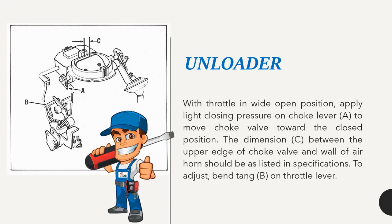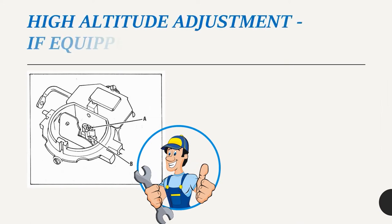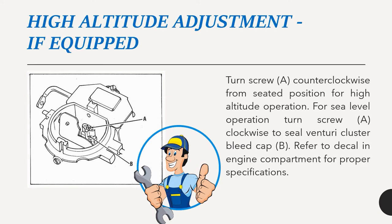Unloader: With throttle in wide open position, apply light closing pressure on choke lever A to move choke valve toward the closed position. The dimension C between the upper edge of choke valve and wall of air horn should be as listed in specifications. To adjust, bend tang B on throttle lever. High altitude adjustment (if equipped): Turn screw A counterclockwise from seated position for high altitude operation. For sea level, turn screw A clockwise to seal Venturi cluster bleed cap B. Refer to decal in engine compartment for proper specifications.